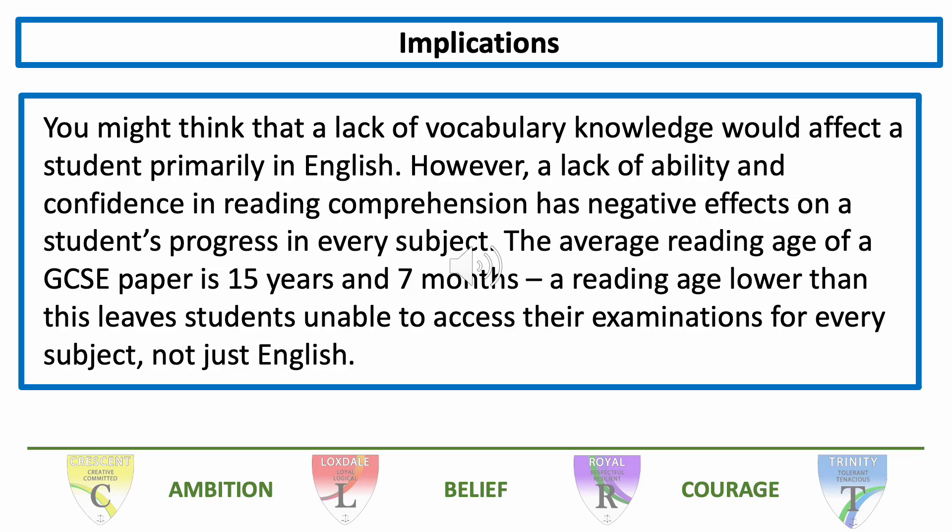You might think that a lack of vocabulary knowledge would affect students primarily in English. However, a lack of ability and confidence in reading comprehension has negative effects on a student's progress in every subject. The average reading age of a GCSE paper is 15 years and 7 months. A reading age lower than this leaves students unable to access their examinations for every subject, not just English.